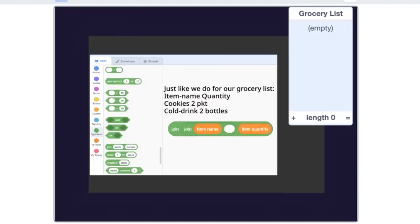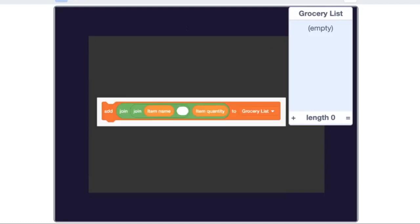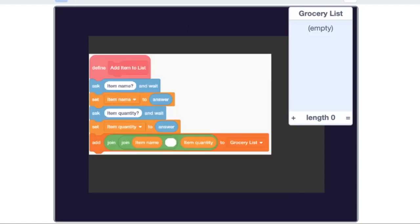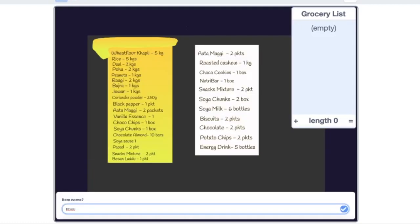Use join to put them together before adding to the list. First, join will join the item name with the space. Join will now add the quantity to the item name. Now just add it to the list. I am loving it.